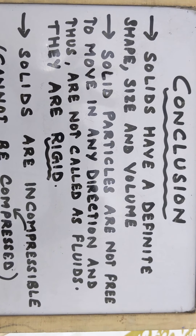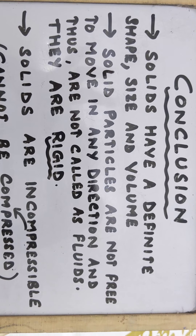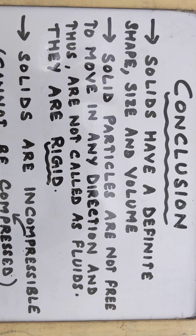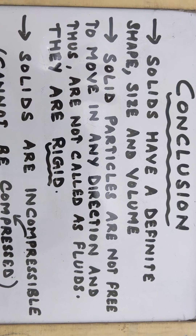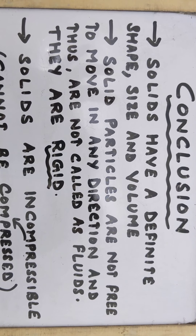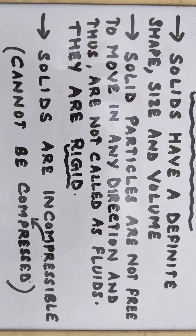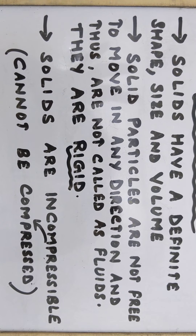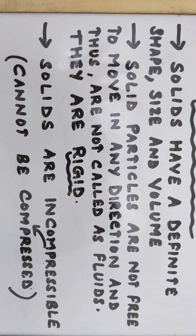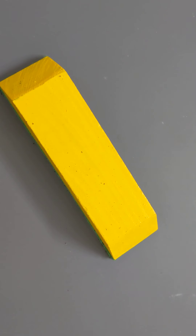From this we can conclude that solids have a definite shape, size, and volume, since they do not have enough space to move, the force of attraction is very strong, and the particles are very tightly packed. Because of the same points, solid particles are not free to move in any direction and as a result they cannot flow — so we do not call them fluids; we call them rigid. Also, since they don't have enough space to move and have a strong force of attraction with close, tight packing, solids are incompressible — meaning they cannot be compressed.